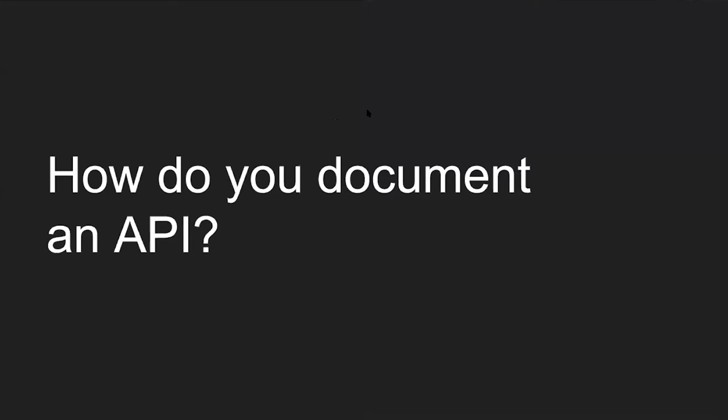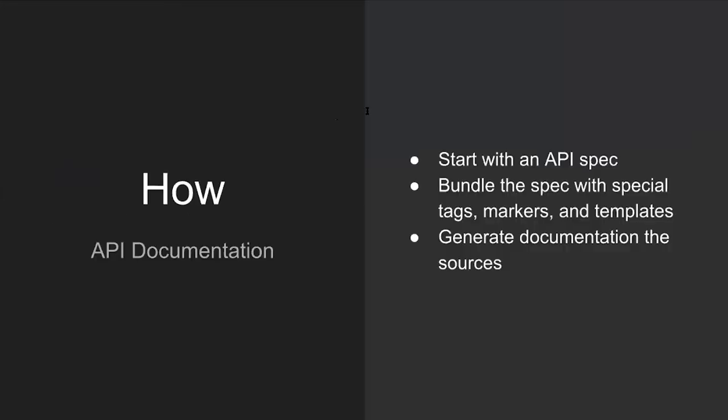How do you document a REST API? You start with an API spec, bundle the spec with special tags, markers, and templates, and then generate the documentation from the sources. At the very least, you need the API documentation to be technically correct. I always suggest generating the bulk of technical documentation from a single source of truth, which is typically an API specification.